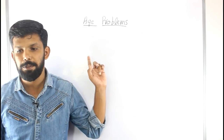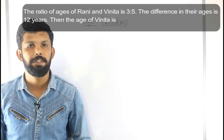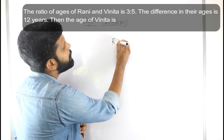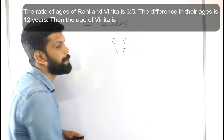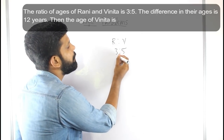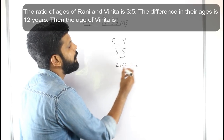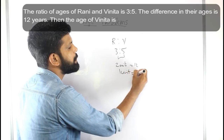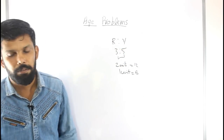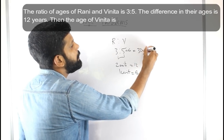Next question: The ratio of the ages of Rani and Vinita is 3 is to 5, and the difference in their ages is 12 years. Find the age of Vinita. The difference in units is 5 minus 3 equals 2 units, and 2 units equal 12. So 1 unit equals 6. Vinita's age is 5 into 6, which equals 30 years.